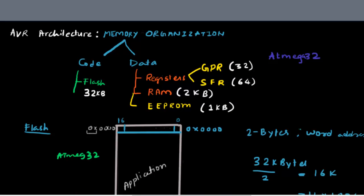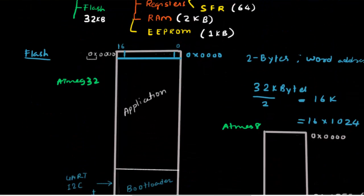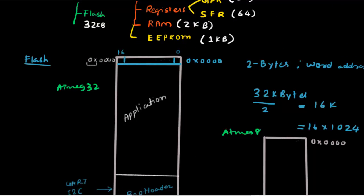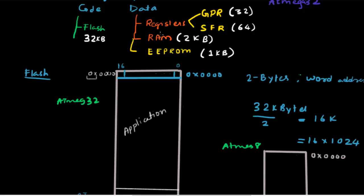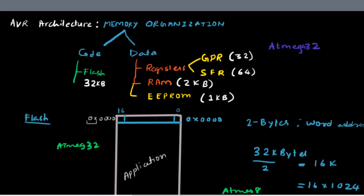There is also the EEPROM memory where you can store data permanently; on the ATmega32 it is 1 kilobyte and arranged as 8 bits per location, so addresses run from 0x000 to 1023. Knowing this memory organization, you understand where your variables are stored — either in registers or RAM — and for permanent storage at runtime, you use the EEPROM. All the code you write for the controller goes and stays in the flash memory.